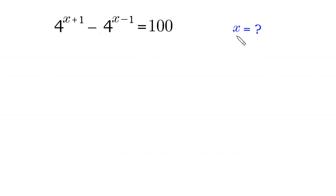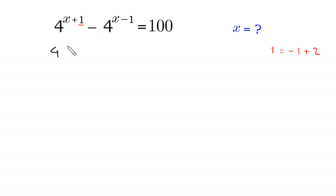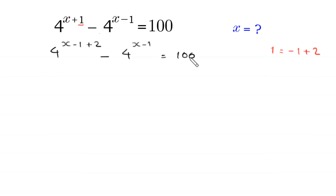Let us start. This 1 can be written as negative 1 plus 2. So this 4 to the power x plus 1 will become 4 to the power x minus 1 plus 2, minus 4 to the power x minus 1, is equal to 100.